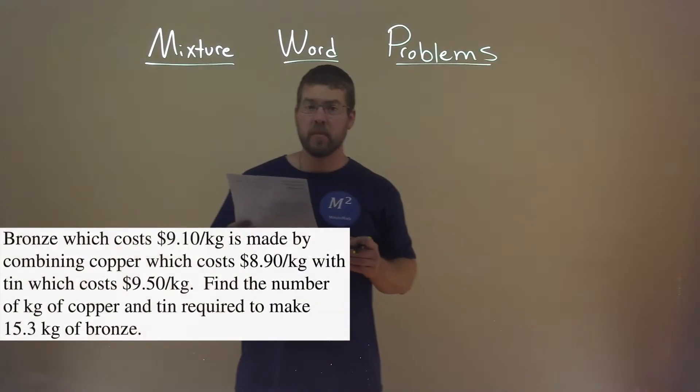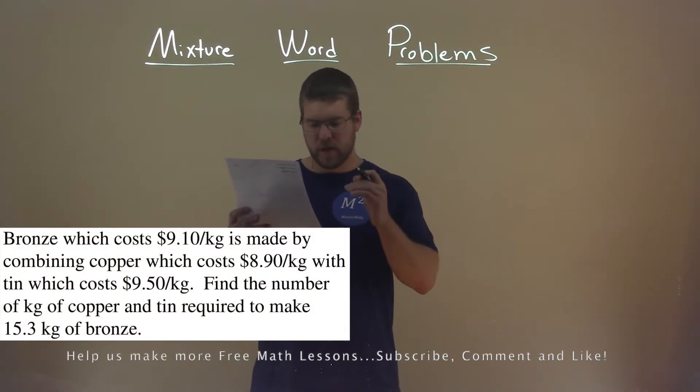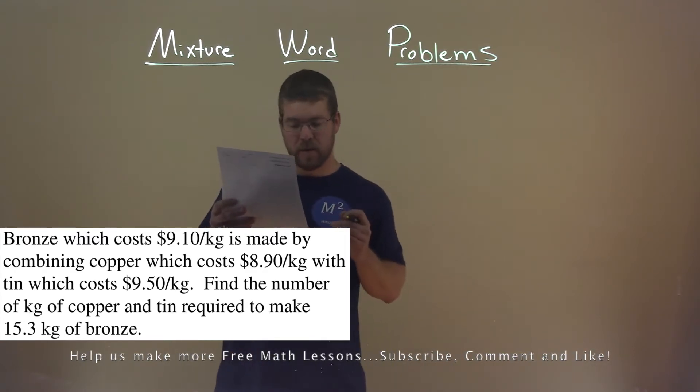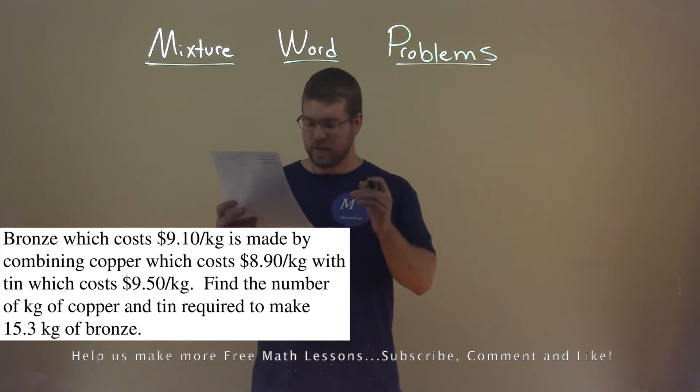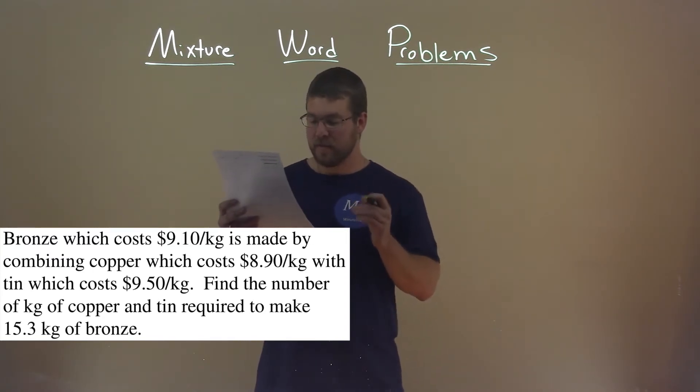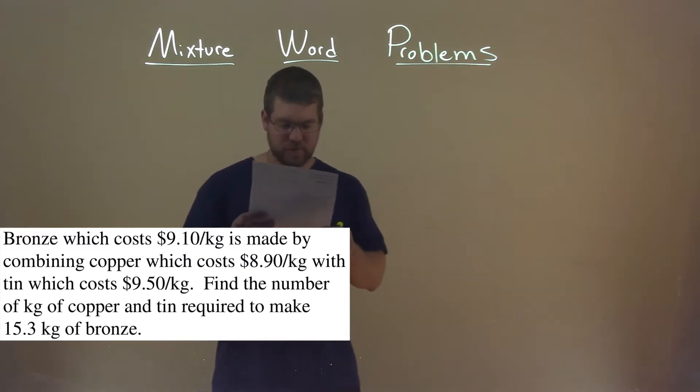We're given this problem right here. Bronze costs $9.10 per kilogram. It is made by combining copper, which costs $8.90 per kilogram, with tin, which costs $9.50 per kilogram. Find the number of kilograms of copper and tin required to make 15.3 kilograms of bronze.